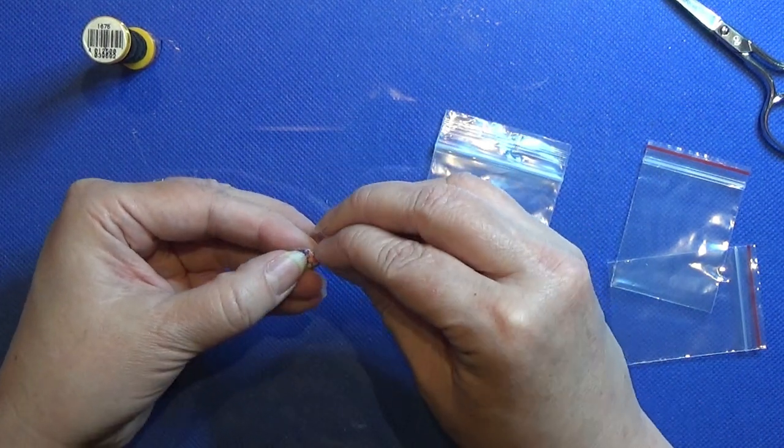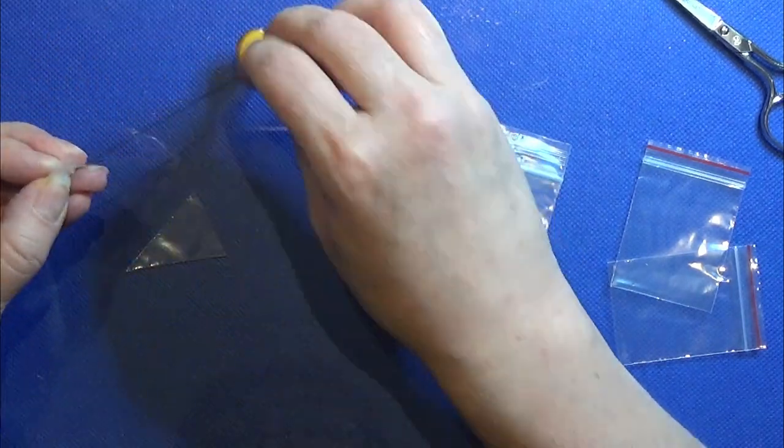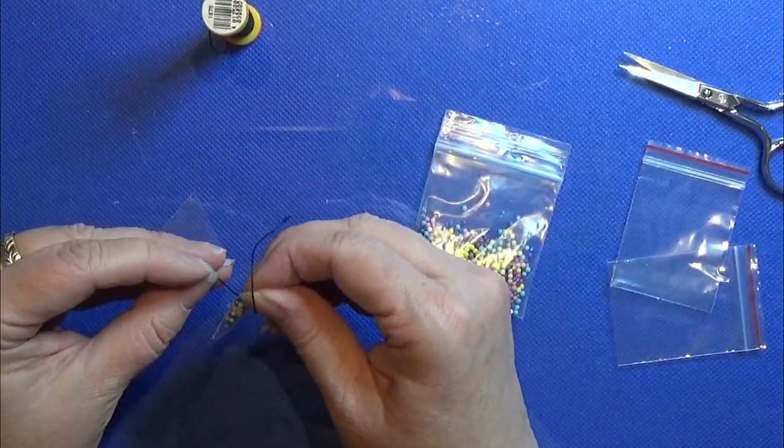I twist the top end of the little candy bag and I'm using a piece of string that I tie around the top to keep it together.